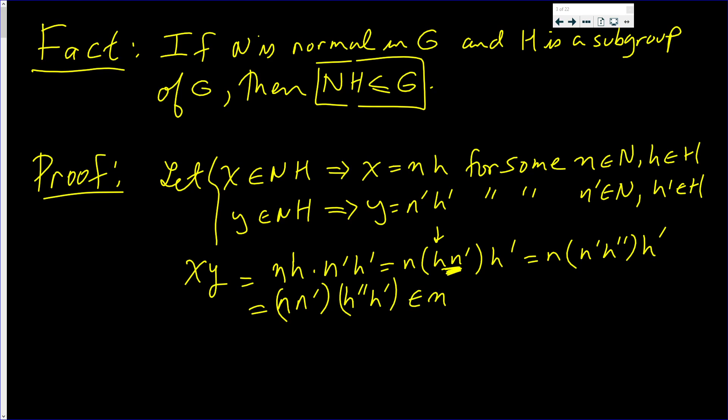And this is nn' in N times hh' in H, which is NH. This implies NH is closed, which implies we have the closure property.